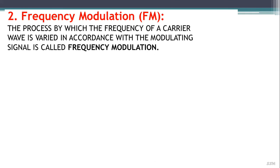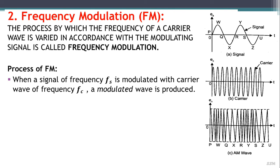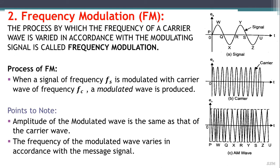Frequency modulation is the process by which the frequency of a carrier wave is varied in accordance with the modulating signal. In figure A is the signal, figure B is the carrier, and figure C is the resultant frequency-modulated wave. When a signal frequency FS is modulated with a carrier wave FC, a modulated wave is produced. The amplitude of the modulated wave is the same as that of the carrier wave, while the frequency varies in accordance with the message signal.